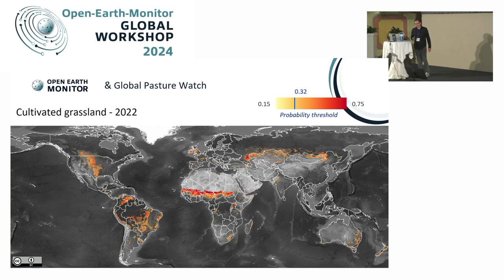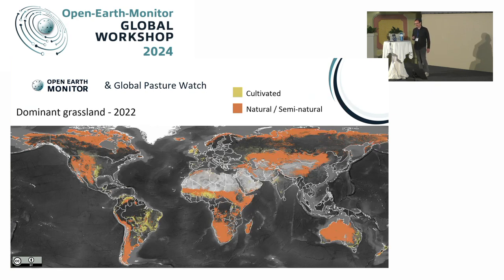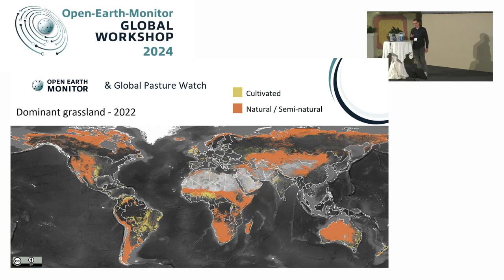We have annual maps — here I'm showing cultivated grassland for 2022, the last year of the time series. We are also delivering grassland probabilities. We did an optimization process to find the best threshold: for cultivated grassland the threshold is 0.32, and for natural and semi-natural grassland it's 0.42. Combining them, we can produce a dominant class map with cultivated grassland as one class and natural and semi-natural grassland as another. Everything is open and part of the Global Pasture Watch project.